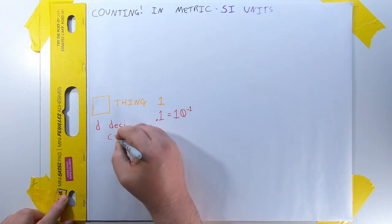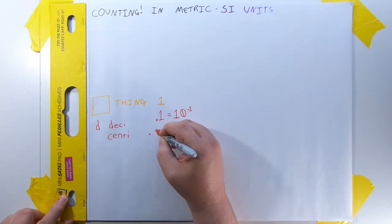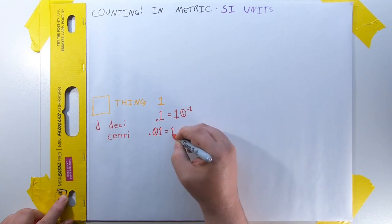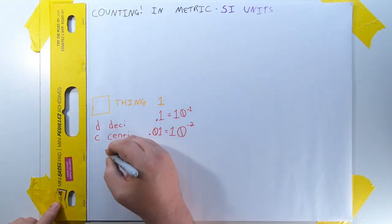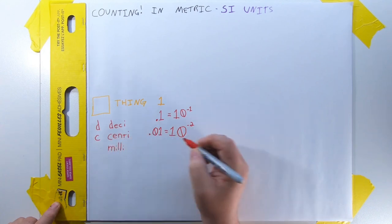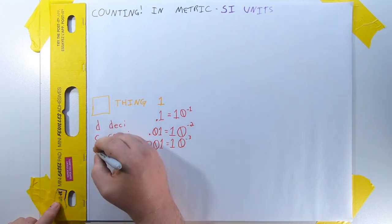If you have a hundredth of a thing, you have a centithing, 0.01 things, or 10 to the negative two things. You use lowercase c. If you have a thousandth of a thing, you have a millithing, or 0.001 things, or 10 to the negative three things. You use lowercase m.